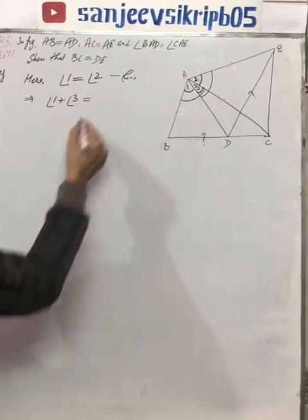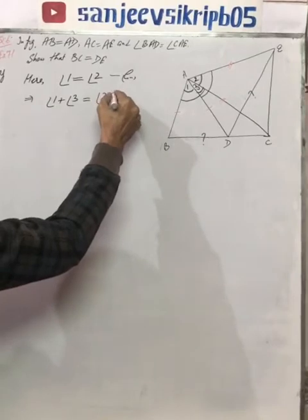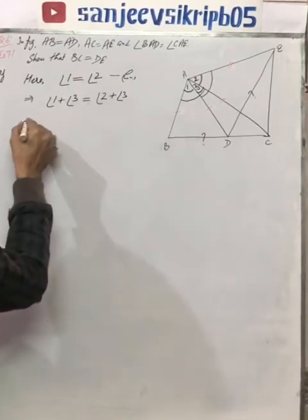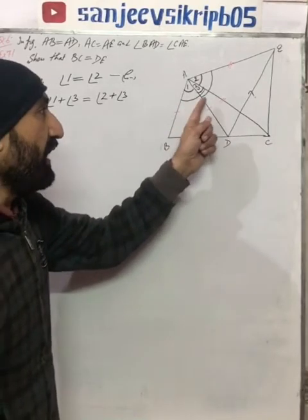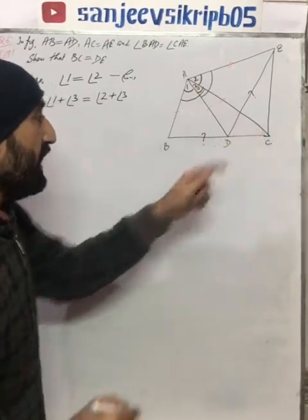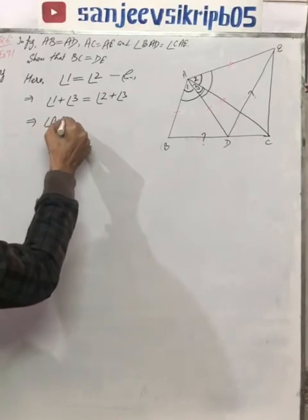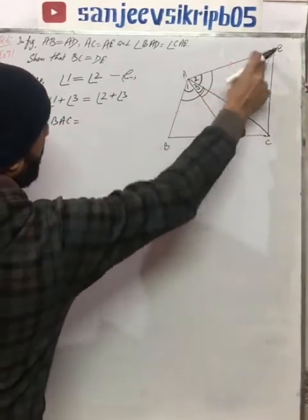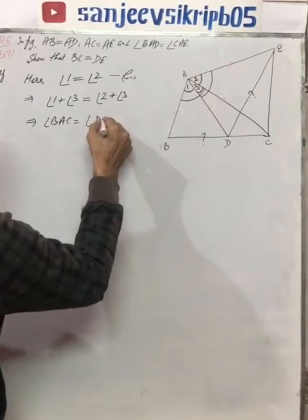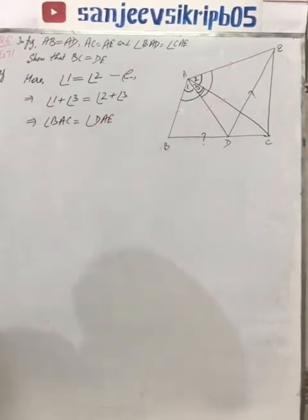Now, if 1 and 3 are added, it gives you angle BAC. 2 plus 3 on adding, they give angle DAE. So we have angle BAC equal to angle DAE.